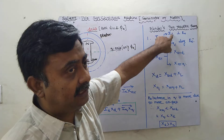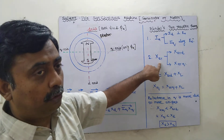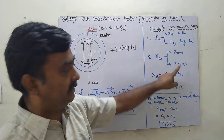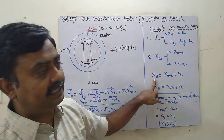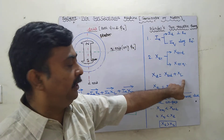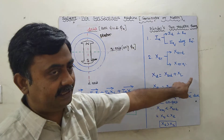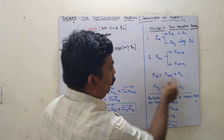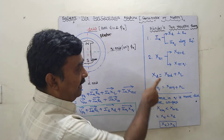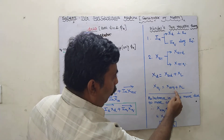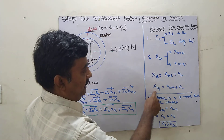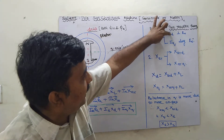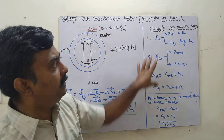The direct axis reactance XD equals XARD plus leakage reactance XL, and the quadrature axis reactance XQ equals XARQ plus XL. So current is divided into ID and IQ, and reactance is divided into XD and XQ. This is Blondel's two-reaction theory. Since the Q-axis air gap is greater, its reluctance is higher and XAR is lower, so XQ is less than XD — that is, XD is always greater than XQ.